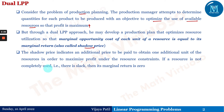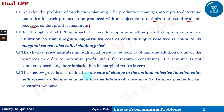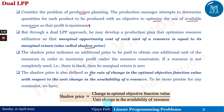If a resource is not completely used, there is slack, and its marginal return is zero. The shadow price is defined as the rate of change in the optimal objective function value with respect to a unit change in the availability of a resource. More precisely, shadow price equals the change in optimal objective function value divided by the unit change in the availability of the resource. This is the definition of shadow price.